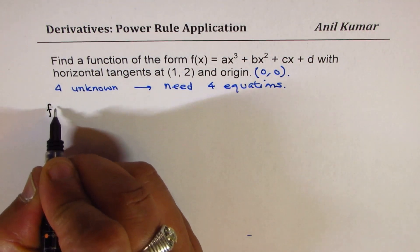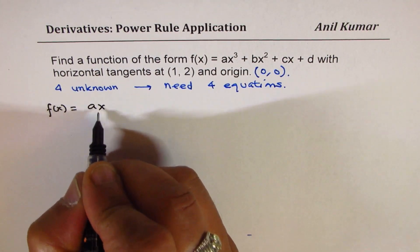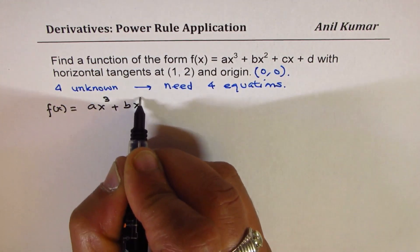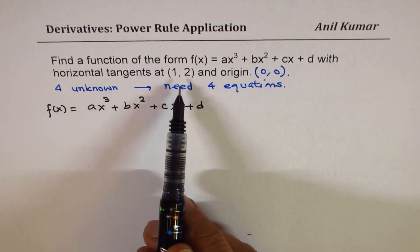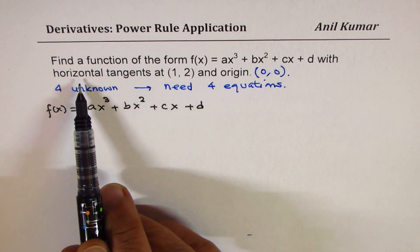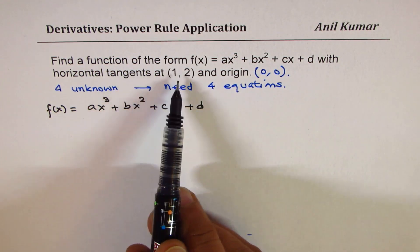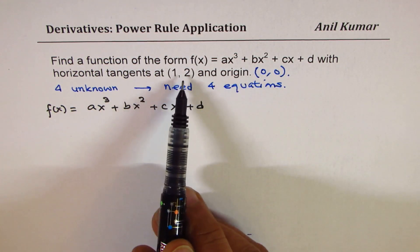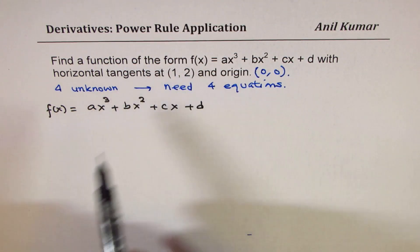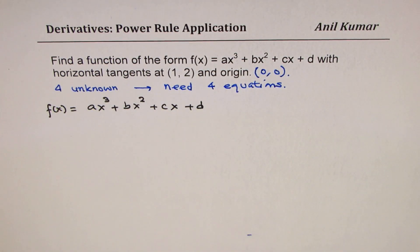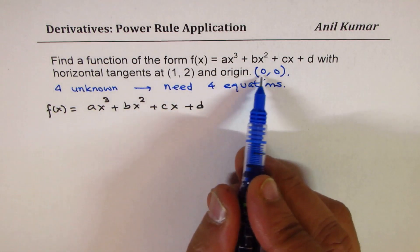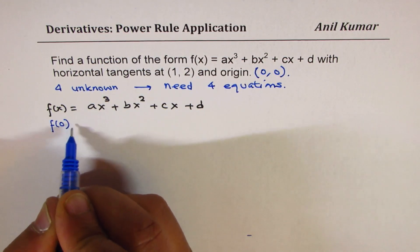So let's see how we can get four equations from here. First, we are given the function itself. Let me rewrite the function as ax cubed plus bx squared plus cx plus d. We are given that these two points are on the function.